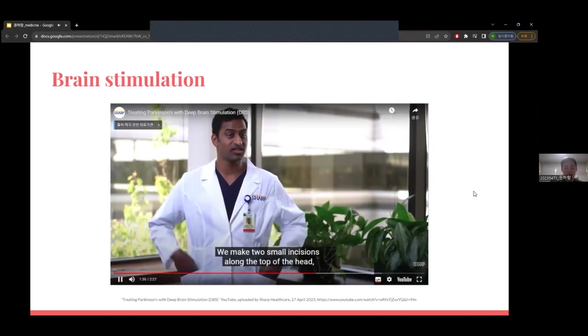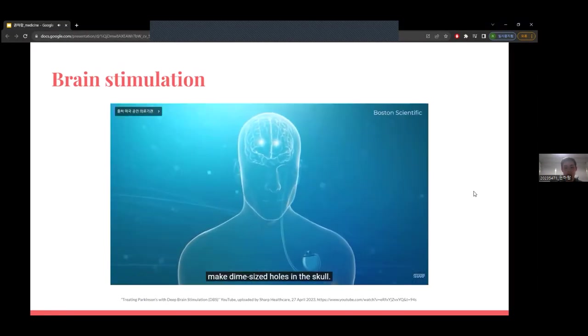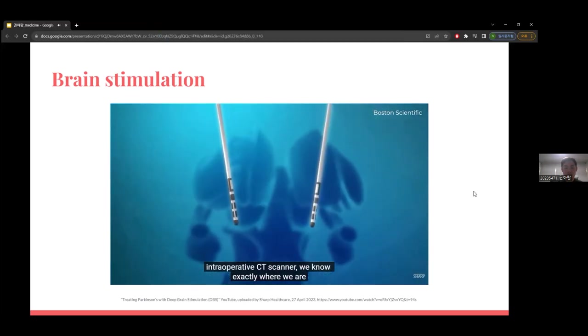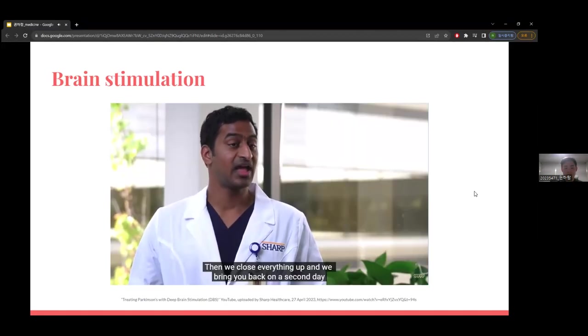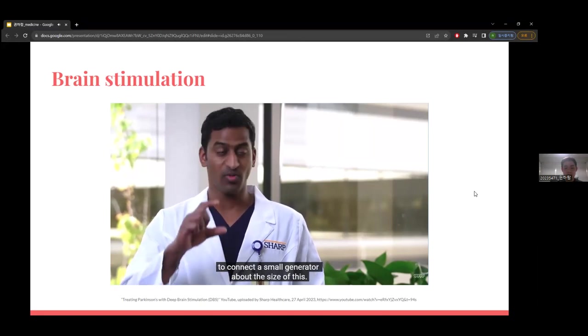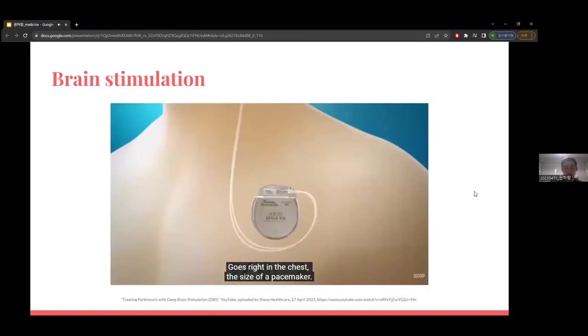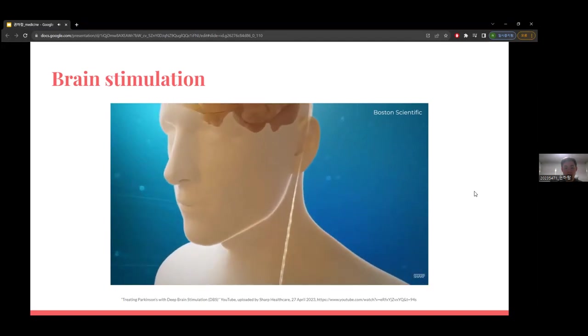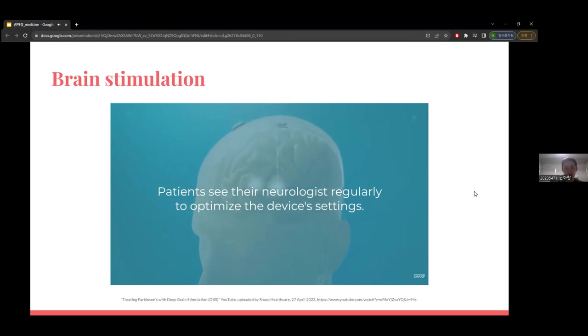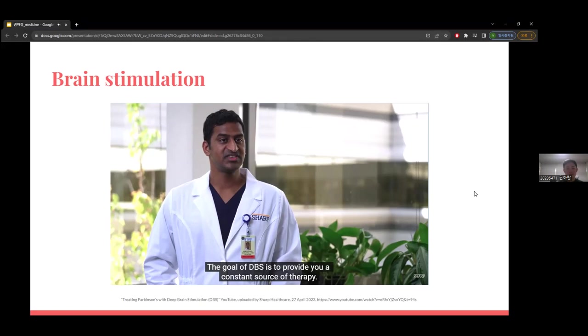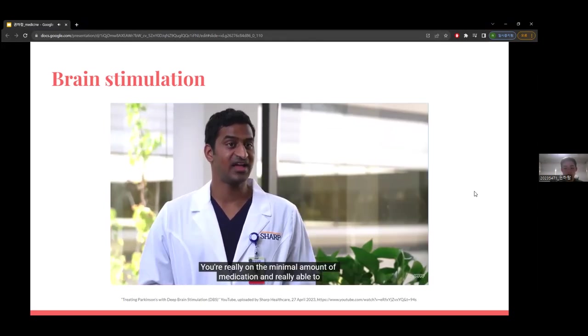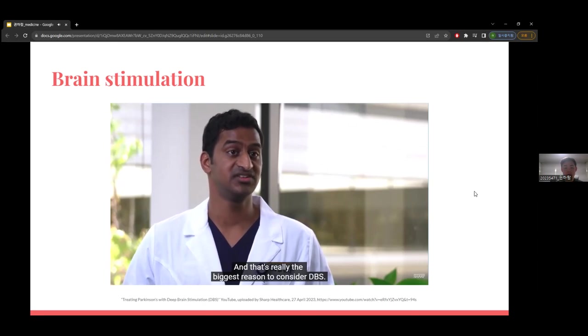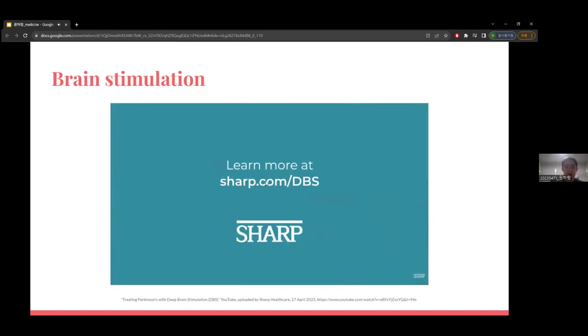In the procedure, we make two small incisions along the top of the head, make dime-sized holes in the skull, and using our advanced intraoperative CT scanner, we know exactly where we're placing these electrodes. Then we close everything up and bring you back on a second day to connect a small generator about the size of a pacemaker in the chest, connecting those leads to the brain fully under the skin so nothing is visible.